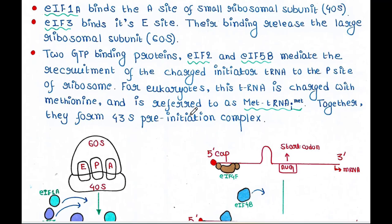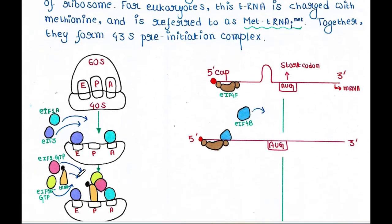And for eukaryotes, this tRNA is charged with methionine. The amino acid that is linked with this tRNA is nothing but methionine, and it is referred to as Met-tRNAi met, I for initiation. In case of prokaryotes, we have seen it was formyl-methionine, but in case of eukaryotes, it is only methionine.